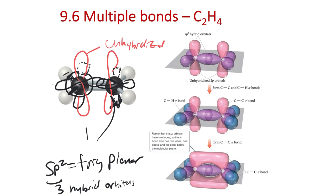Both carbon atoms go sp2, and then the unhybridized p orbital can overlap to make what we call a pi bond. From the textbook sketch, you get this orbital where the electrons are being distributed across a plane instead of along a bond axis. We call this type of bond a pi bond.